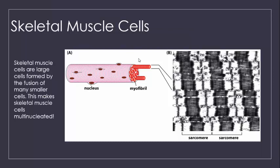Let's take a closer look at the composition of skeletal muscle cells. These don't match the traditional cell we focus on when we talk about cell structure. Instead, a single muscle cell is the result of the fusion of many smaller cells, resulting in a multinucleated supercell.